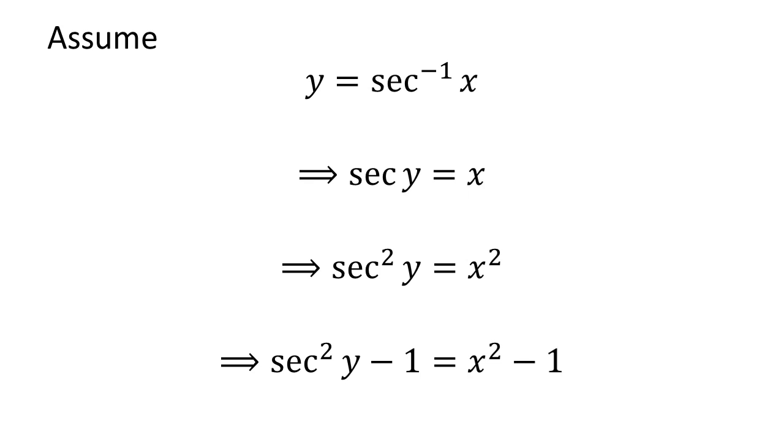Subtraction of 1 from both sides doesn't change the equation. So, we get square of secant of y minus 1 is equal to square of x minus 1.